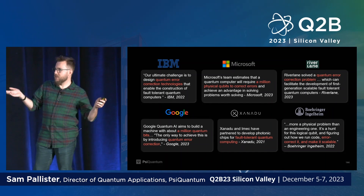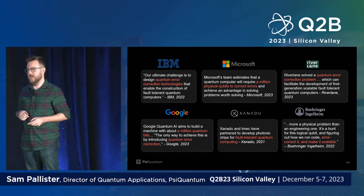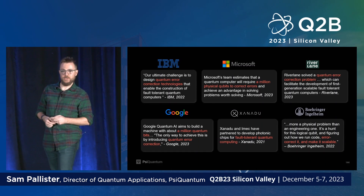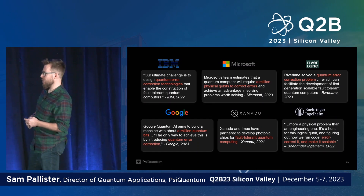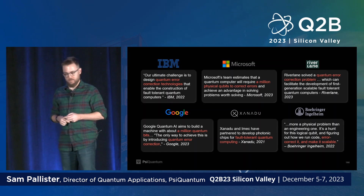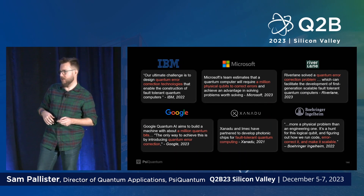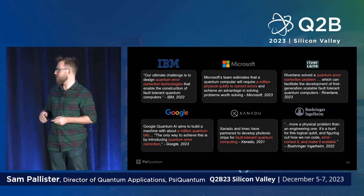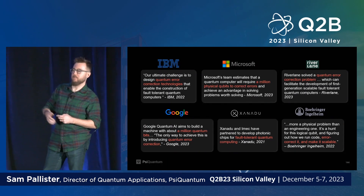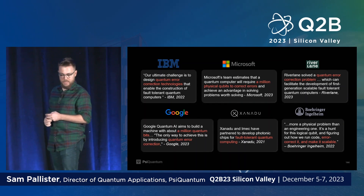However, there's obviously a gulf in capabilities between the machines we have access to today and the kind of devices we need to build to derive commercial advantage. The majority of publicly disclosed roadmaps on this slide aim for devices with millions of qubits of sufficient quality to be below the error correction threshold for whatever error correcting code they plan on implementing.